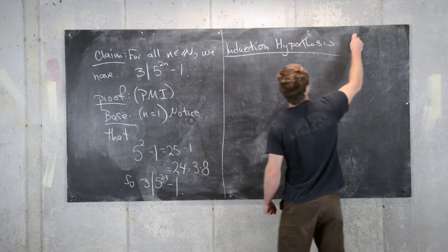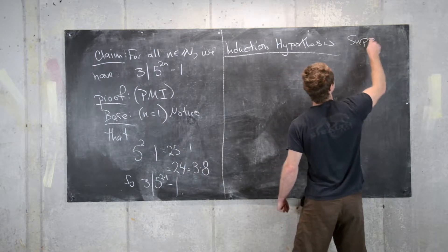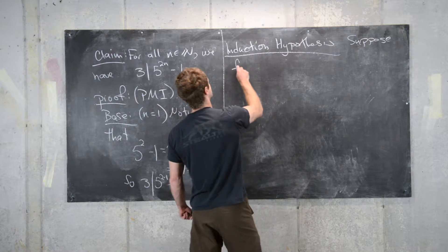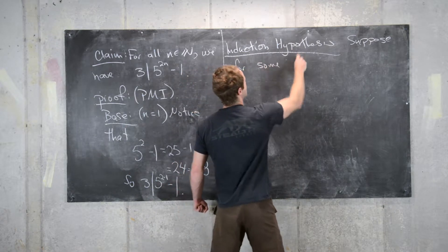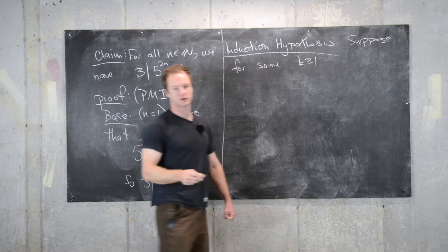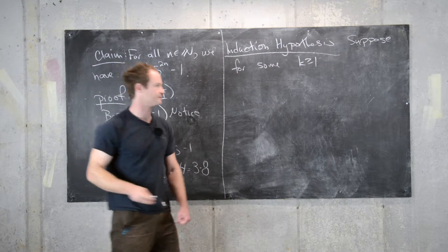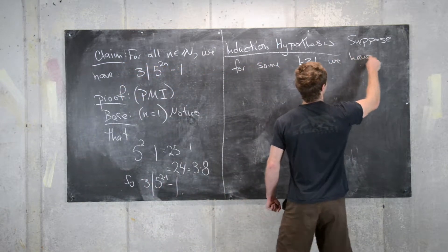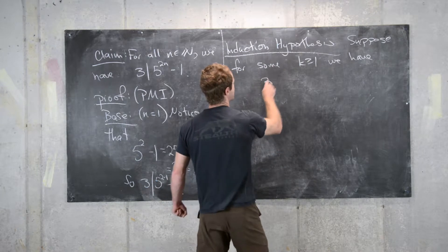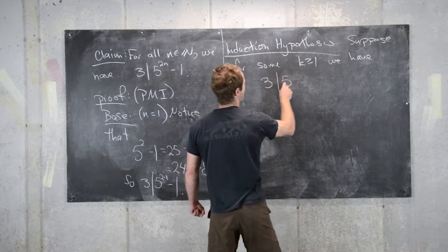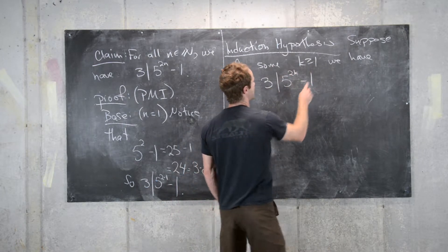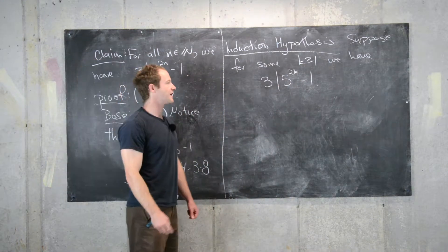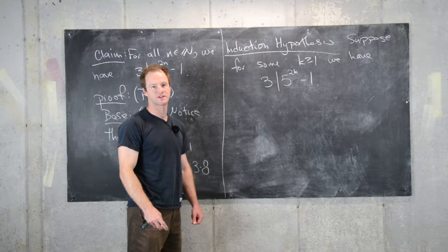Now let's make an induction hypothesis. Suppose that for some k greater than or equal to one, we have three divides five to the two k minus one. That's our induction hypothesis. Now moving on to the k plus one step.